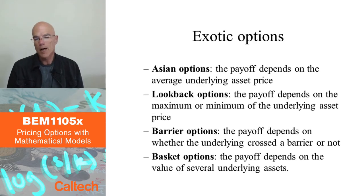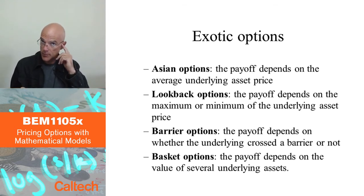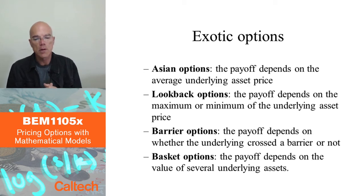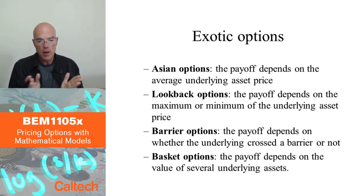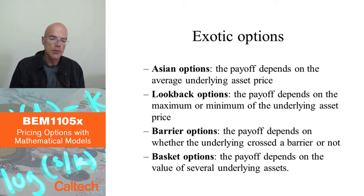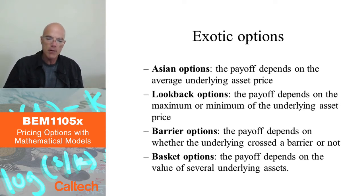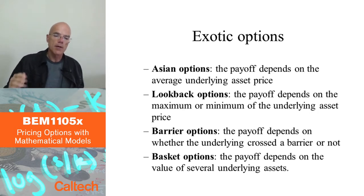Exotic options: anything which is not a call or a put option is usually called an exotic option. It doesn't have to be that exotic — it's just not the simple right to buy or to sell. For example, there's something called Asian options — again a geographical name without much reason behind it. Asian options are options which can be a call or a put, but the payoff is a function of the average price of the underlying during the lifetime of the option.